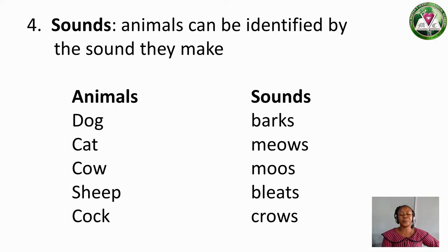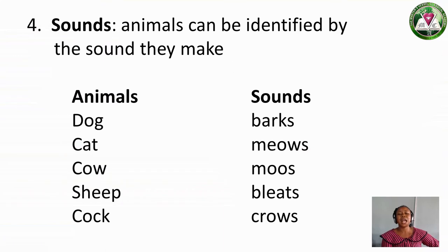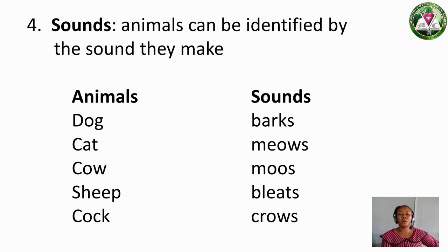We have Cow — the cow goes moo. Cow Moos. Next is Sheep — can you make the sound of sheep? Sheep Bleats. Another one is Cock — can you make the sound of a cock? Cock Crows.